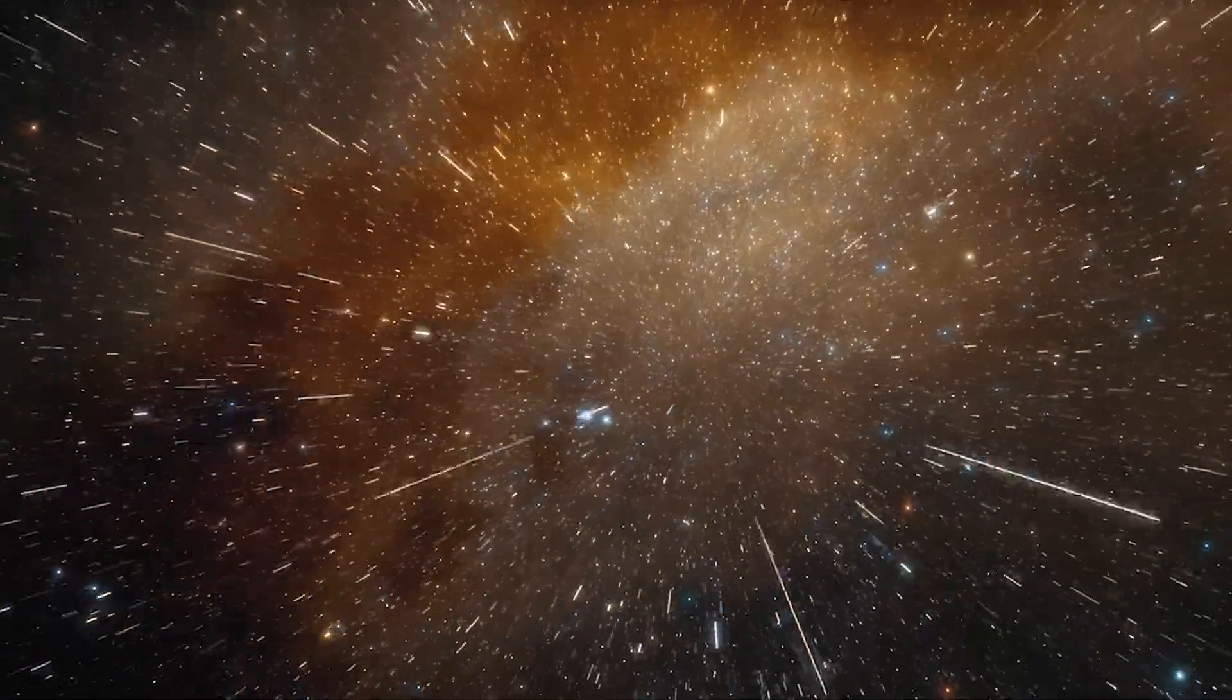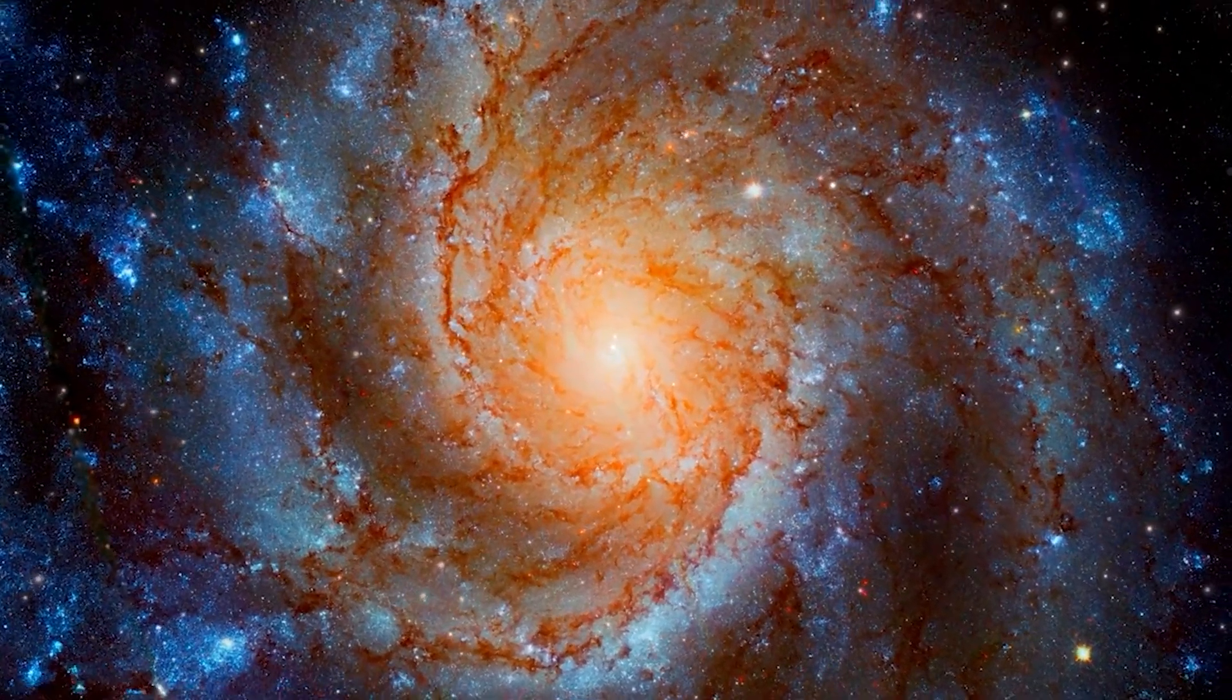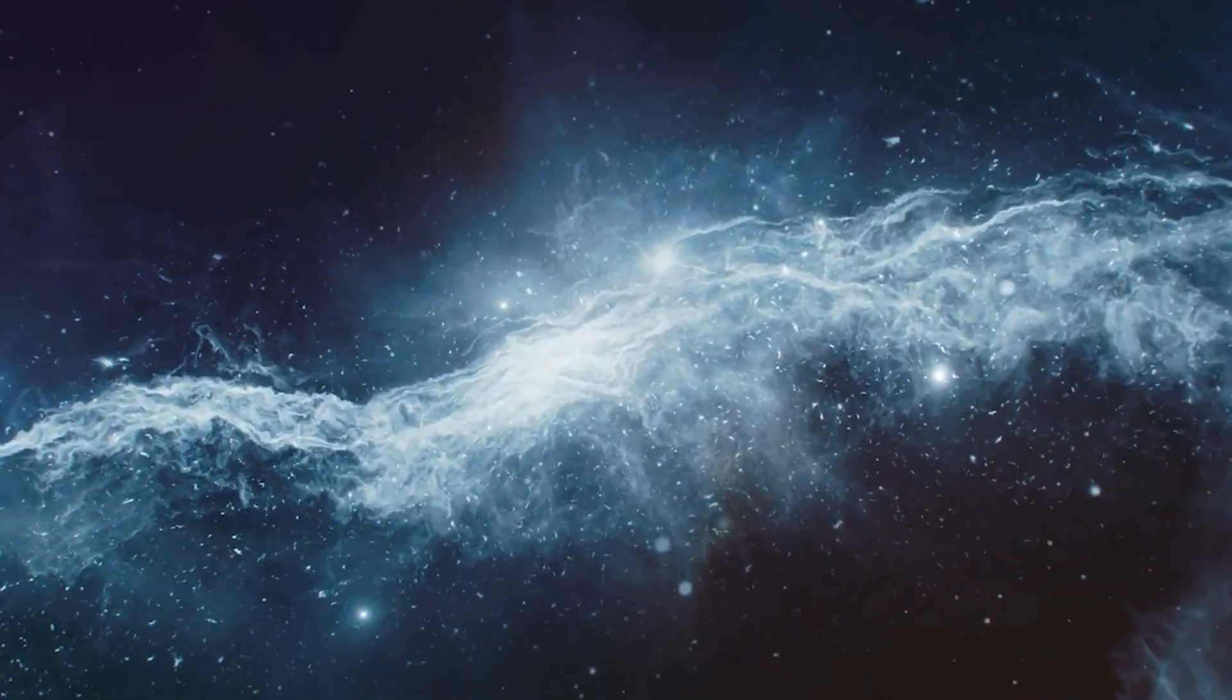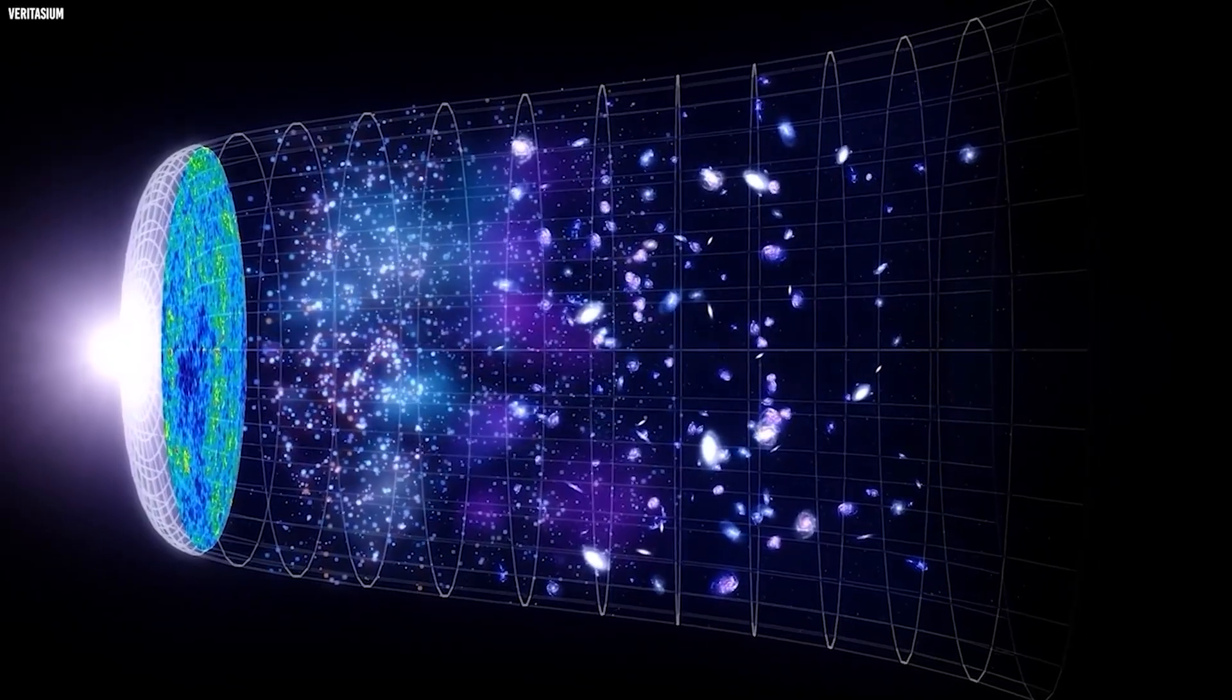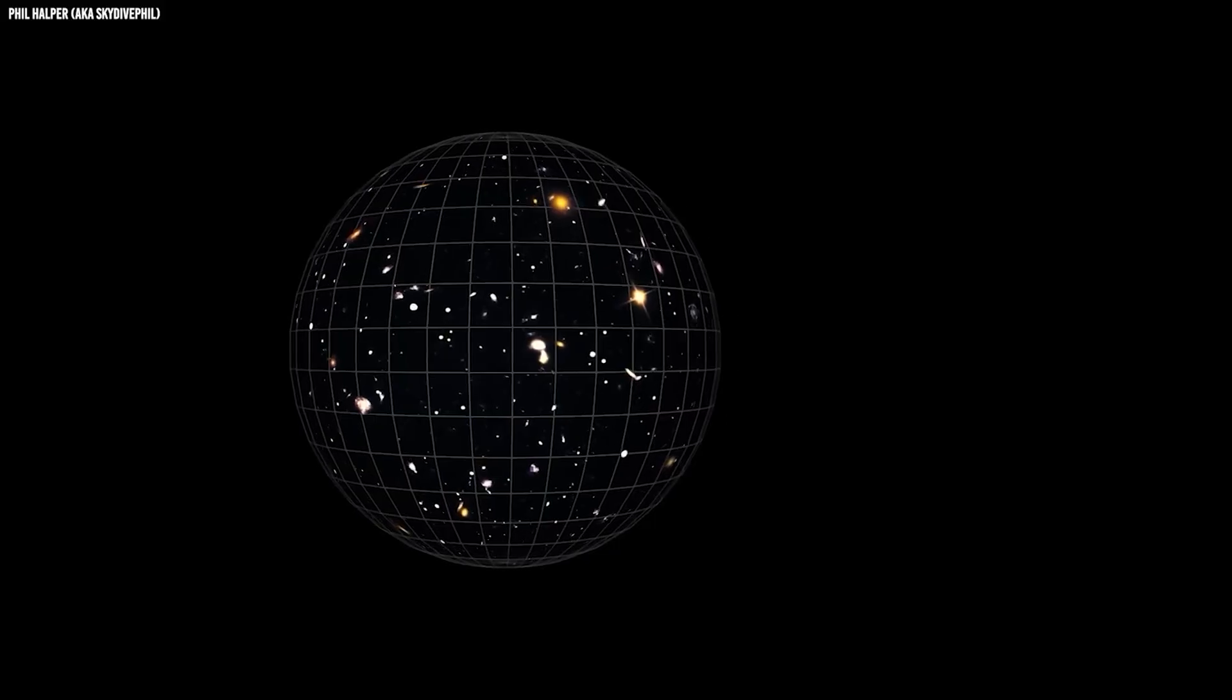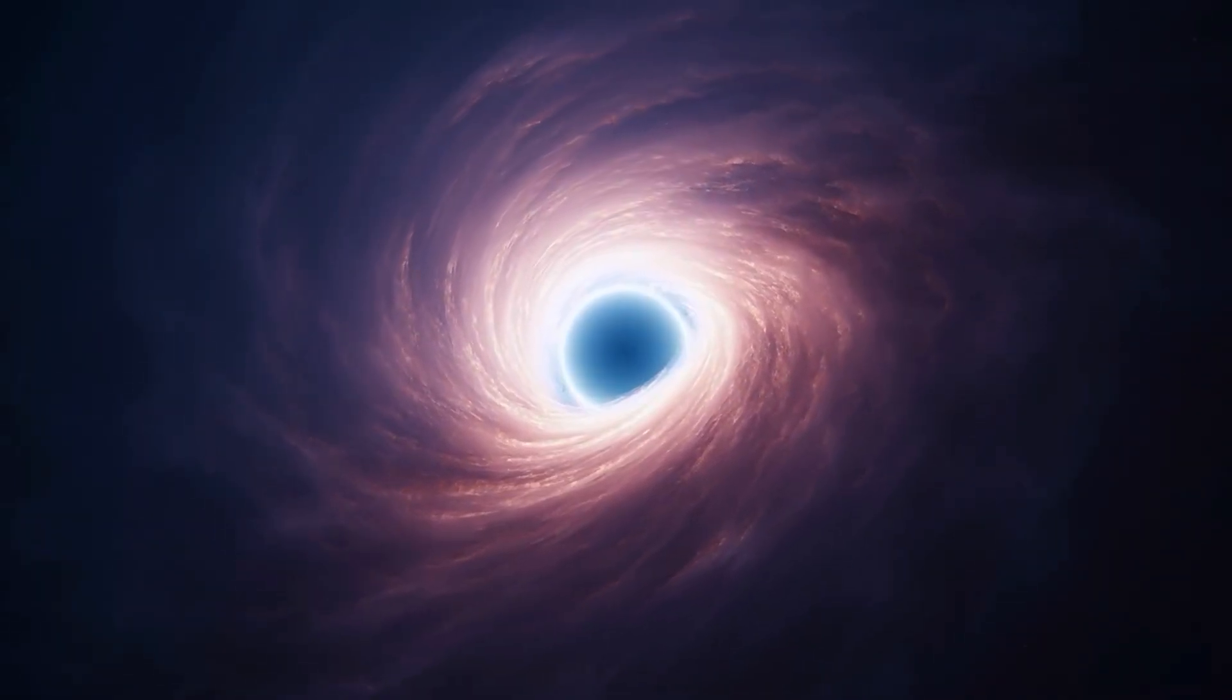Another twist is the possibility that our cosmos might quietly point in a particular direction. Observations of large-scale structures hint at subtle alignments in how galaxies distribute their mass and move, patterns that aren't supposed to exist if the universe is perfectly uniform. This phenomenon, known as cosmic anisotropy, challenges the cornerstone assumption that the universe looks the same everywhere on vast scales. If a preferred axis really exists, it might reveal undiscovered physics or even connect to how our universe formed inside a black hole, or how the basic forces behave at unimaginable scales.